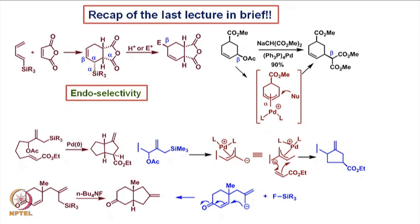When we reacted it with an electrophile like a proton or any other electrophile, the double bond interacts with the electrophile in such a fashion that the carbon-electrophile bond formation occurs here to give this particular type of carbon-E bond. The cation is coming at the beta position with respect to silicon, again emphasizing the beta silicon effect. So the regioselectivity of the double bond interacting with the electrophile was basically guided by the beta silicon effect.